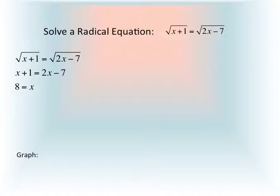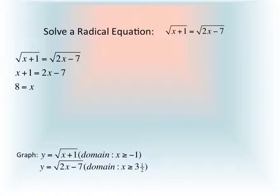I think it's a good idea to take a look at this on the graph. We'll take the left side of the original equation and set that equal to y, so we have y equals the square root of x plus 1, where the domain is x greater than or equal to negative 1. Simultaneously, on the same coordinate plane, we're going to be graphing y equals the square root of 2x minus 7, where the domain is x greater than or equal to 3.5.